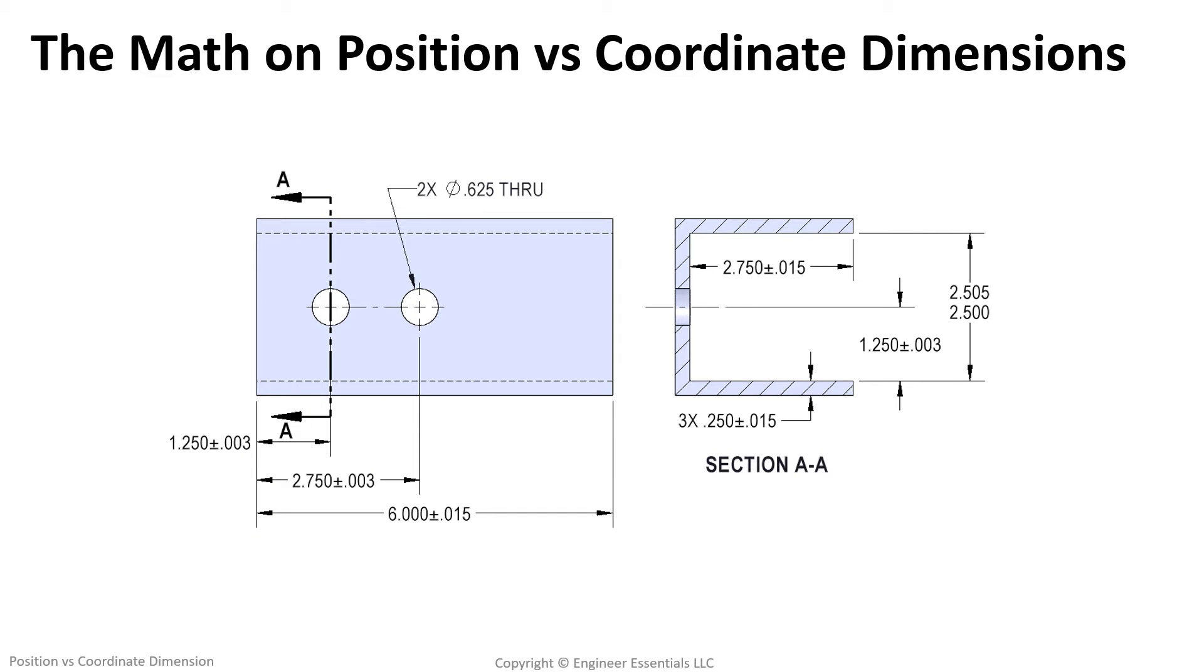So let's assume you have a coordinate dimension print, and you know there's extra tolerance being left out like we saw in the previous slides, and you want to convert your print to using the position symbol instead of directly applied tolerances like we saw in the rectangular dimensions.